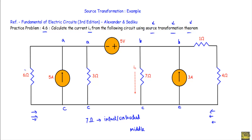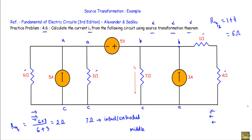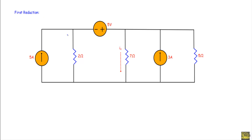Between terminals A and C, we have a 6 ohm and a 3 ohm resistance connected in parallel. Between terminals B and C, we have a 1 ohm and a 4 ohm resistance connected in series. The equivalent parallel resistance is 6×3 over 6+3 = 2 ohm. The equivalent series resistance is 1+4 = 5 ohm. Replacing these gives us the first reduction of the circuit.